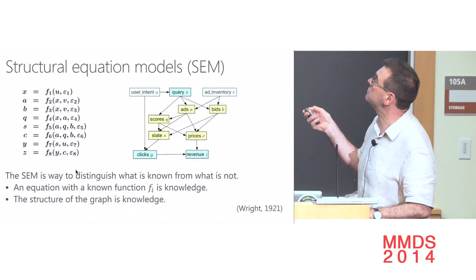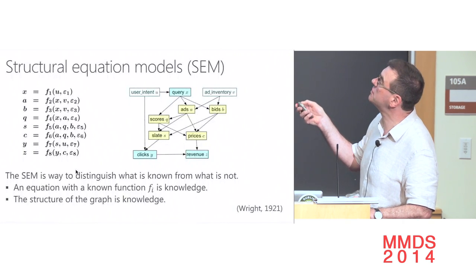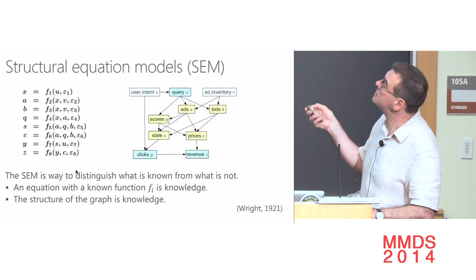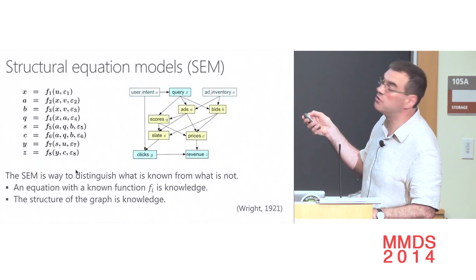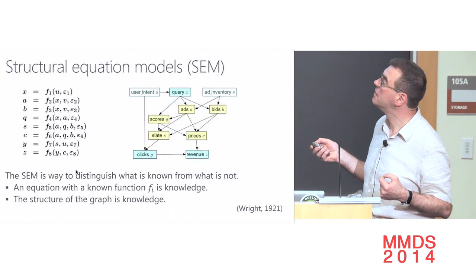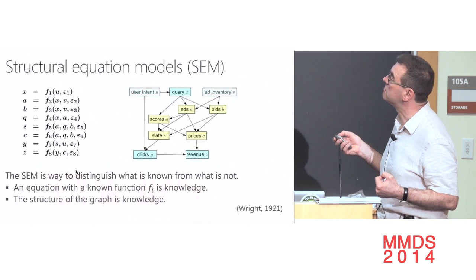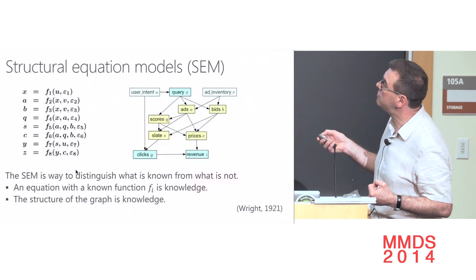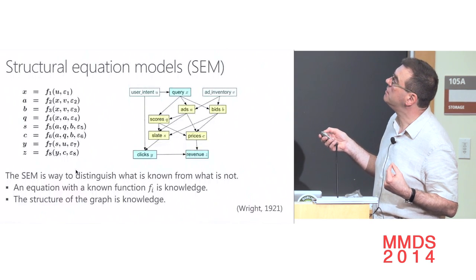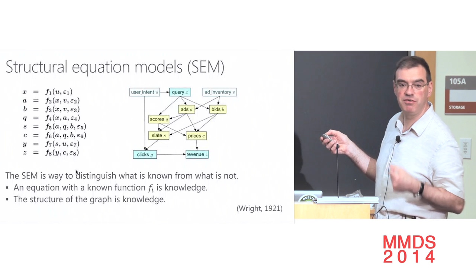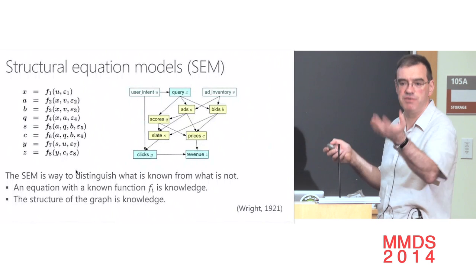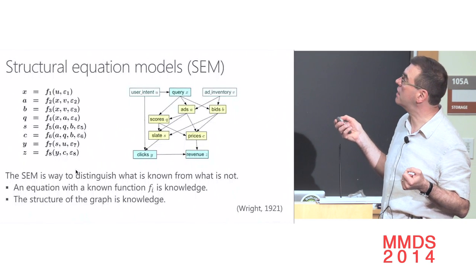You can express all these relations with formulas that take the direct antecedent variables plus a noise variable — assumed independent for each formula to do statistics. This is called a structural equation model. Importantly, not all of these formulas are known — this is a device to distinguish what is known from what is not. If I know the analytic form of one of these formulas, that's knowledge. But knowing only which variables a formula depends on — and which it does not — is knowledge too. The lack of an arrow is knowledge.